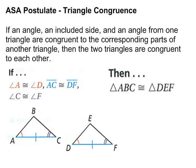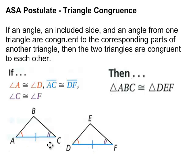Angle-Side-Angle: if you have an angle, an included side, and an angle — following that order, Angle-Side-Angle — and here's another triangle, also Angle-Side-Angle. One mark, one mark for one angle; one mark for the side; two marks for that angle, two marks for that angle — Angle-Side-Angle — then these two triangles are congruent, and you write it in the correct order.